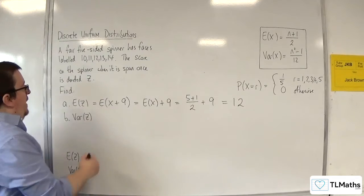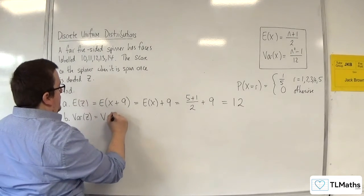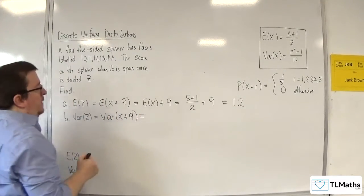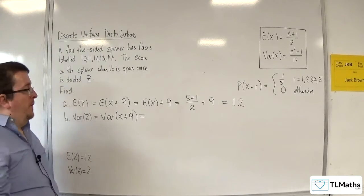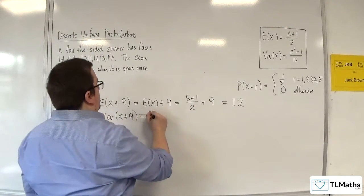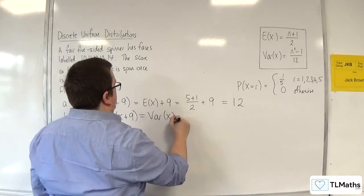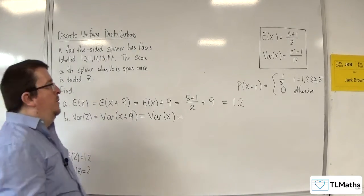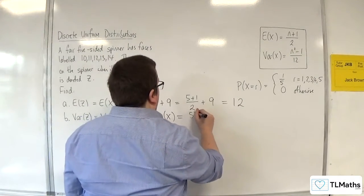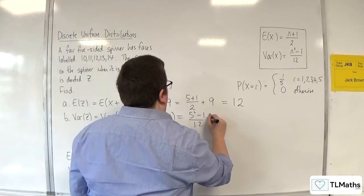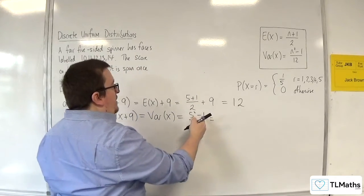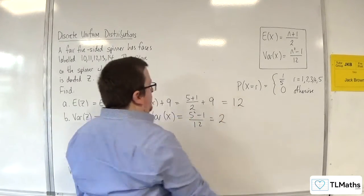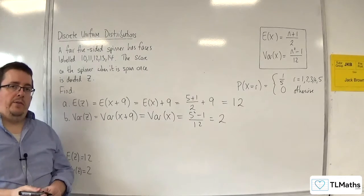And var of z is var of x plus 9. And we know the properties of var, so that's var of x. The 9 can be ignored. So that would just be 5 squared take away 1 over 12, so 25 take away 1 is 24 divided by 12 is 2. And we get the results that we had previously.